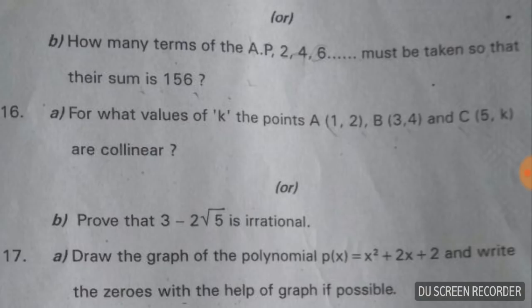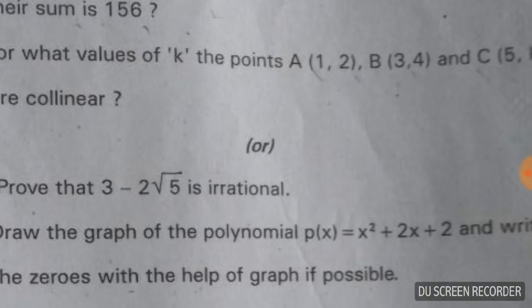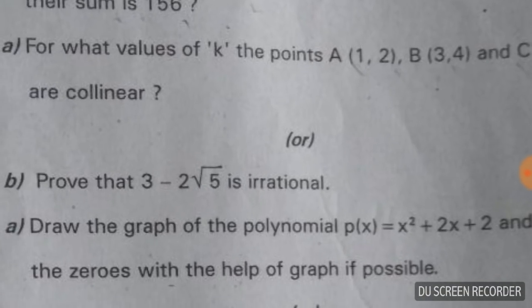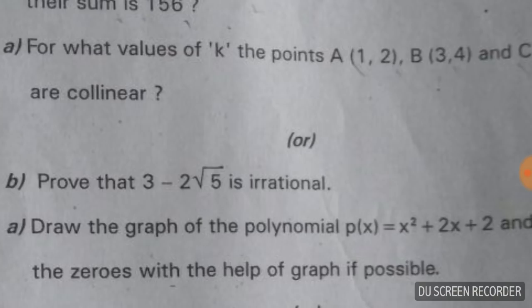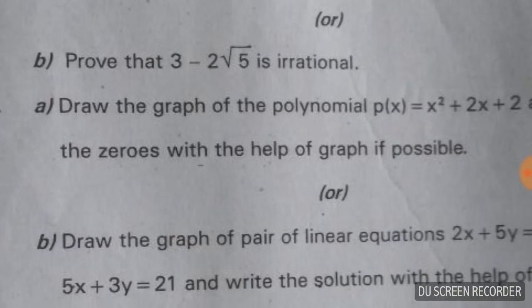For what values of k are the points A(1, 2), B(3, 4), and C(5, k) collinear? Use the collinearity formula, substitute the values, and make it equal to 0. Then you will get the value of k.